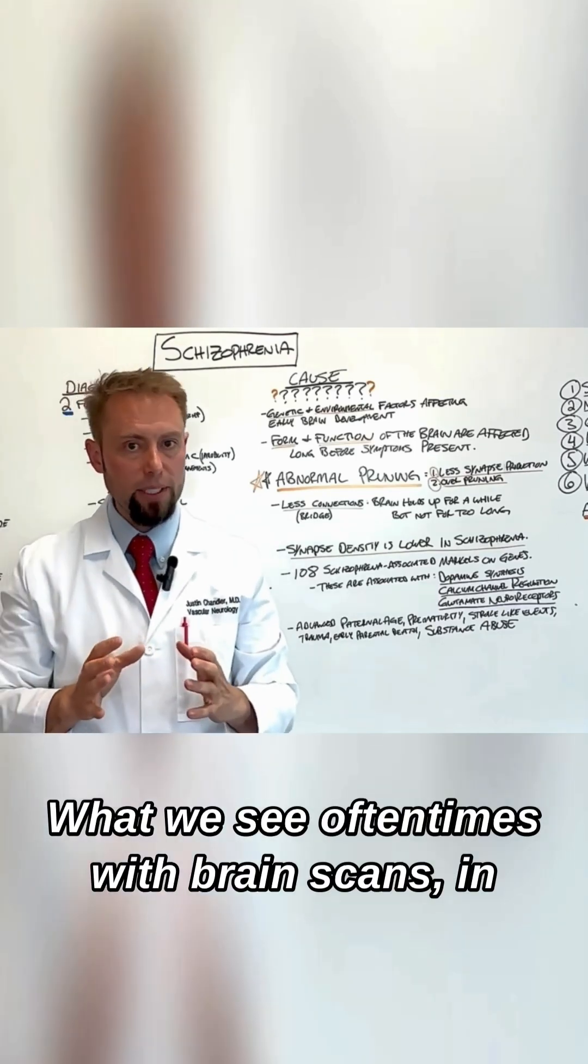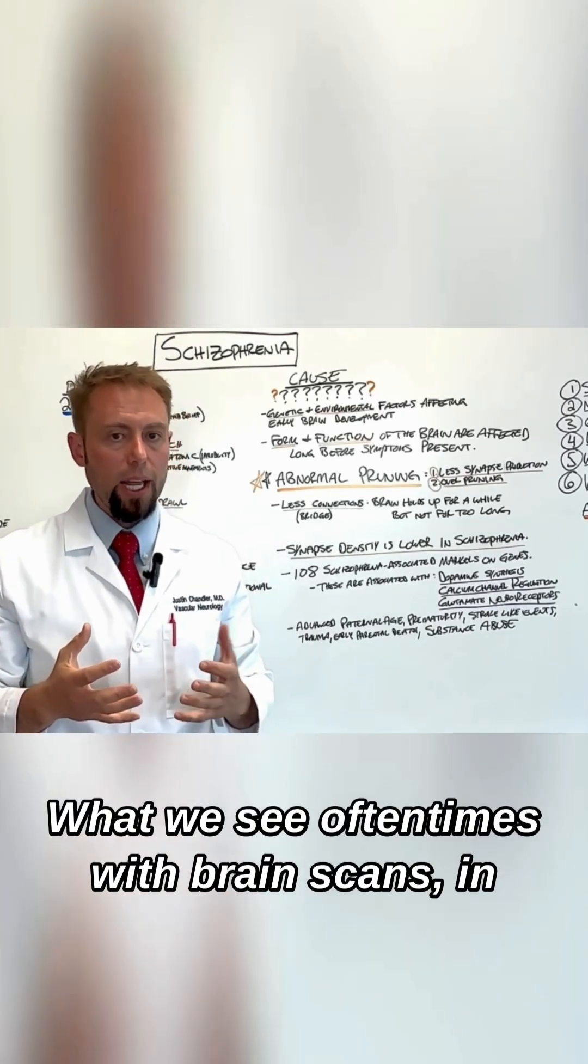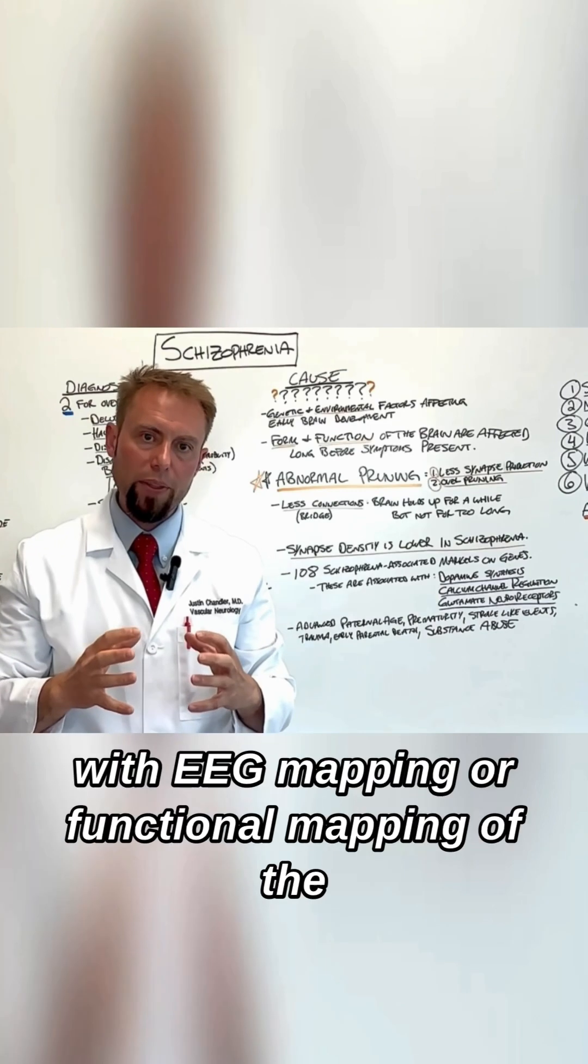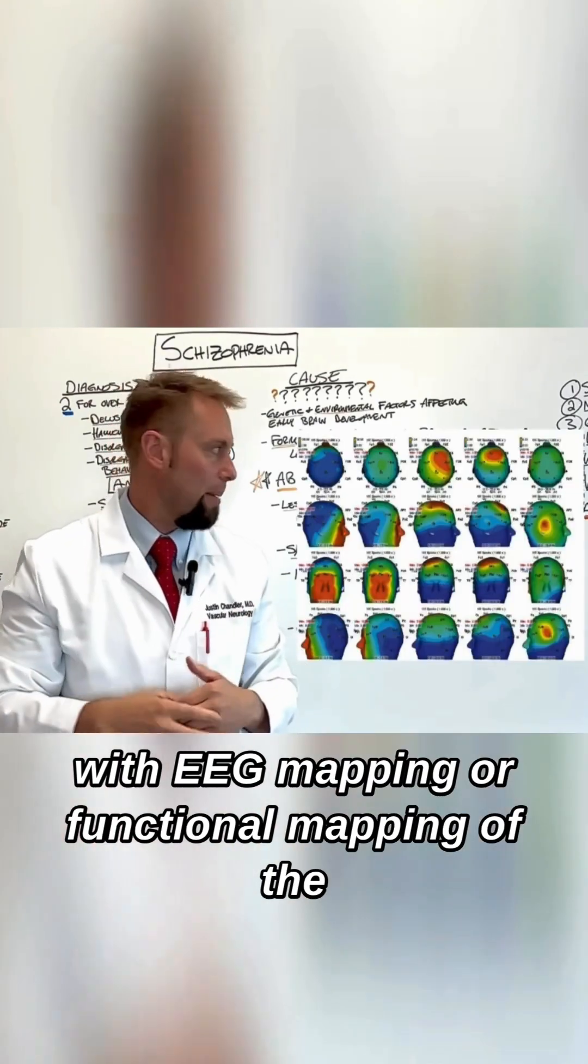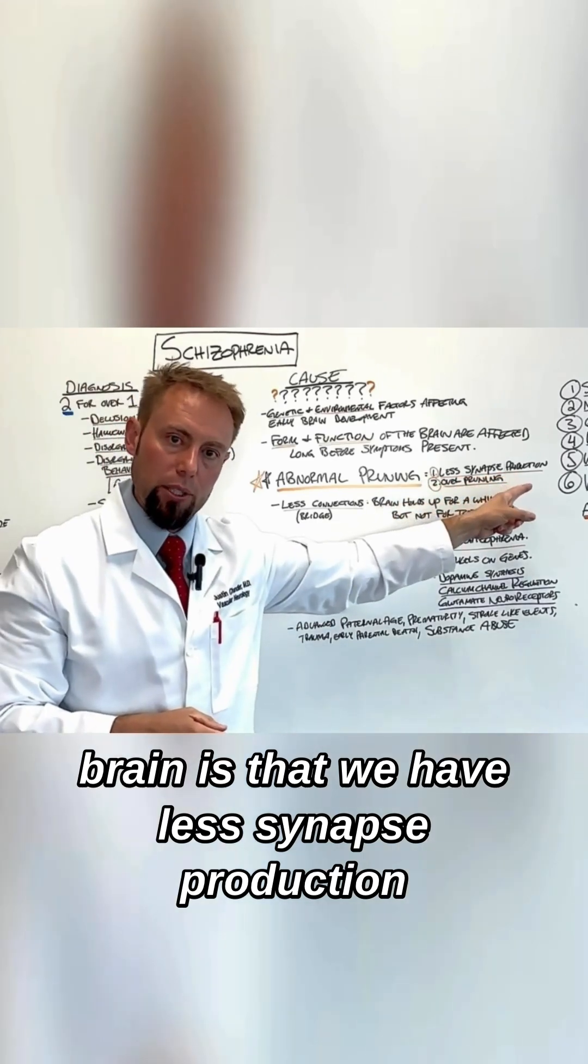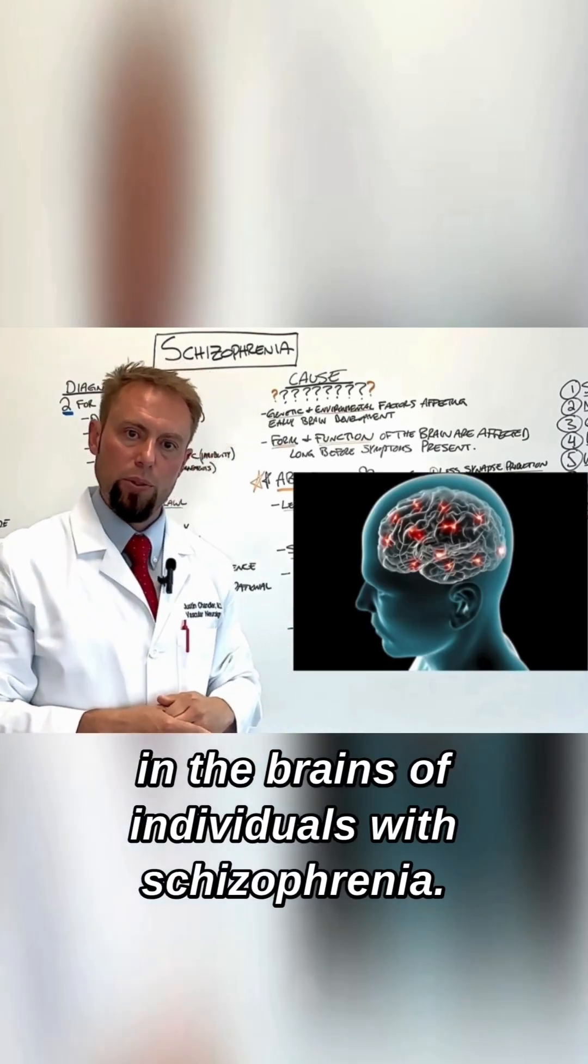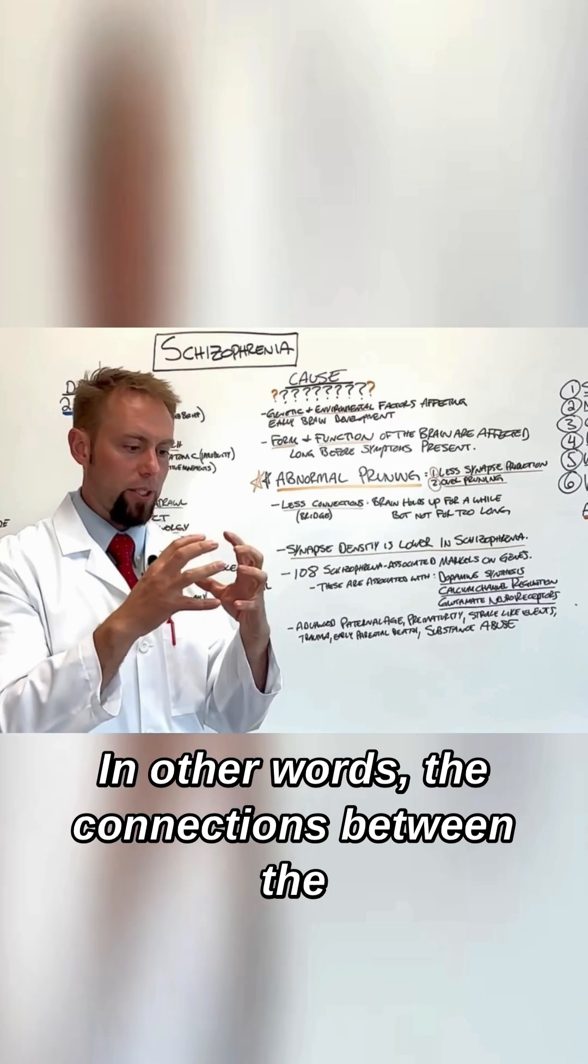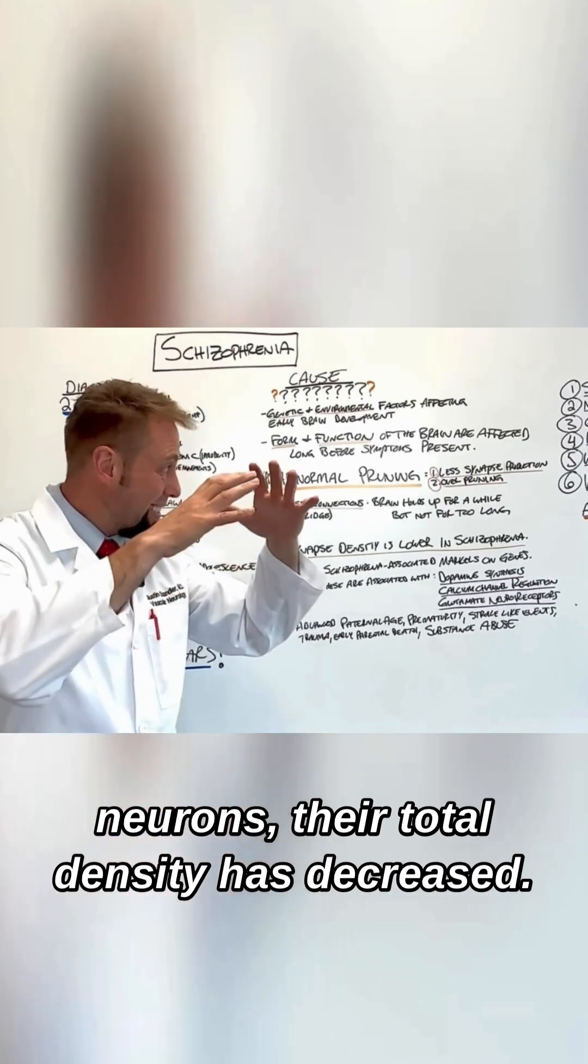What we see oftentimes with brain scans, in fact we can see some of these things with EEG mapping or functional mapping of the brain, is that we have less synapse production in the brains of individuals with schizophrenia. In other words, the connections between the neurons, their total density has decreased.